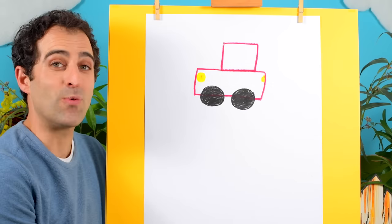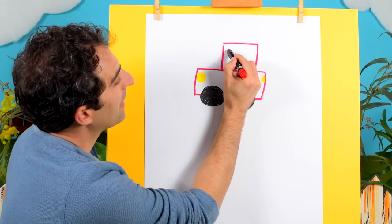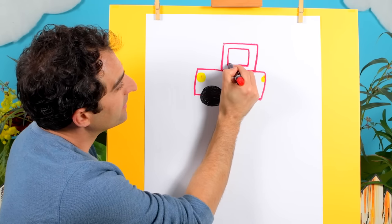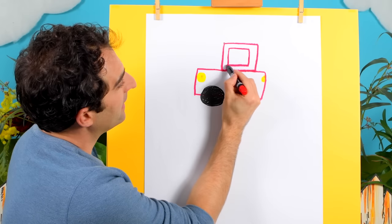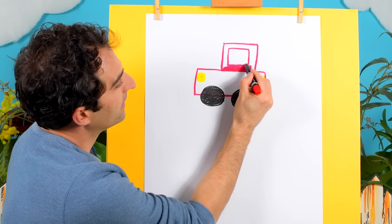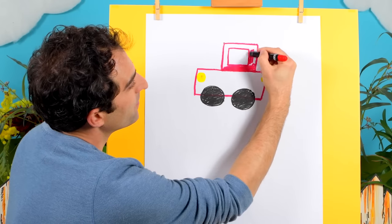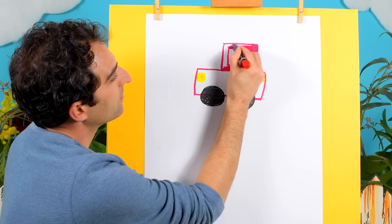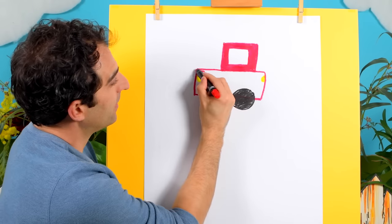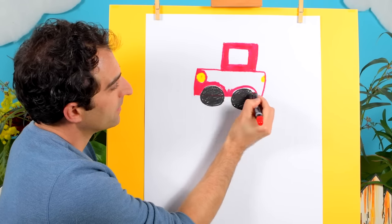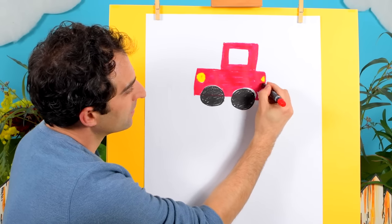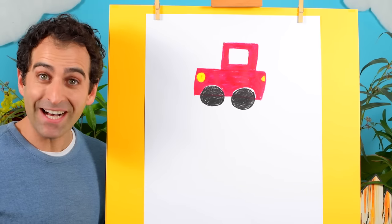How about a window for our car? Up the top here, let's draw a square inside there. There we go. And you can color in around the window, just like that. And there we go. We've drawn a red car.